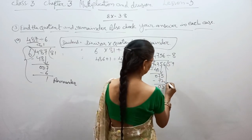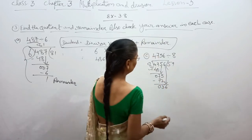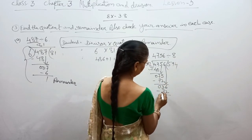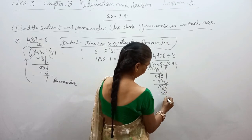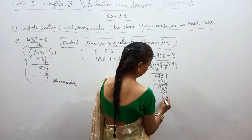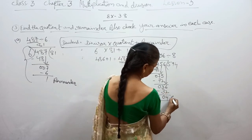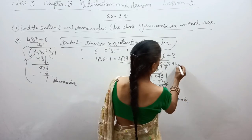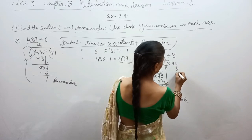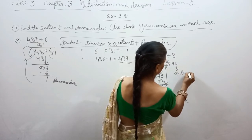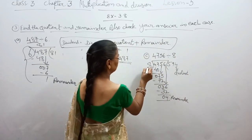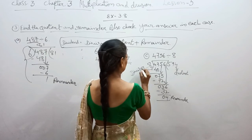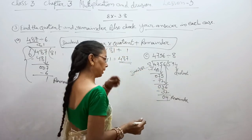Now carry down 6 to make 36. 8 into 36 — 8 fours are 32, minus 36 minus 32 gives 4. 3 minus 3 is 0. So the remainder is 4, the quotient is 594, and the divisor is 8.